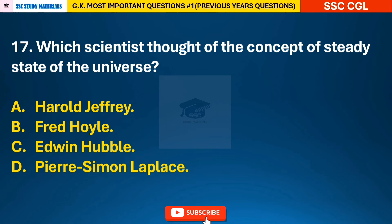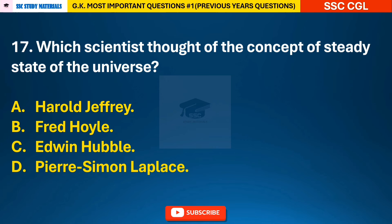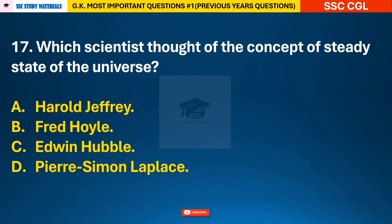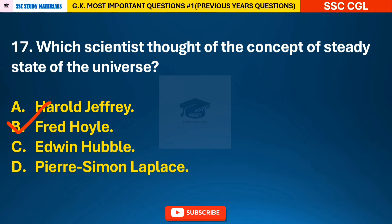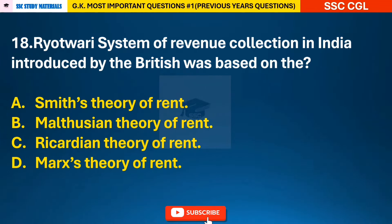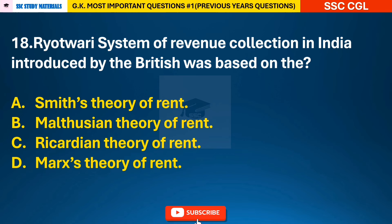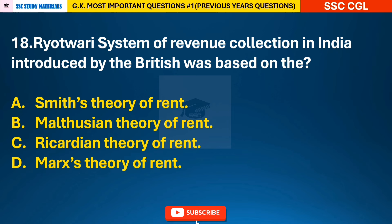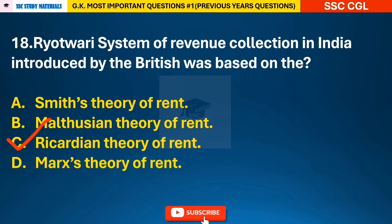Question 17: Which scientist thought of the concept of the steady state of the universe? — answer B: Fred Hoyle. Question 18: The Ryotwari system of revenue collection in India introduced by the British was based on the Ricardian theory of rent.